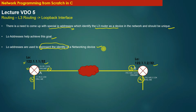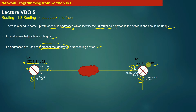If somebody asks what is the IP address of machine A, the answer is that the IP address of machine A is 122.1.1.1/32. If somebody asks for the identity of machine B, the loopback address of machine B is 122.1.1.2/32. Loopback addresses identify the networking device as a whole in the network — they are used to represent the identity of the networking device.